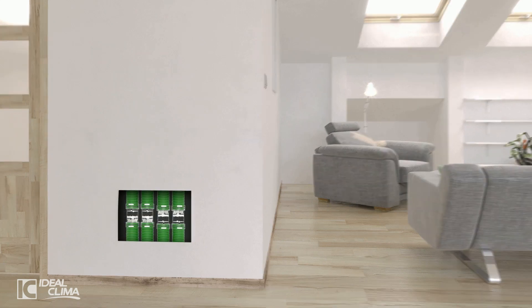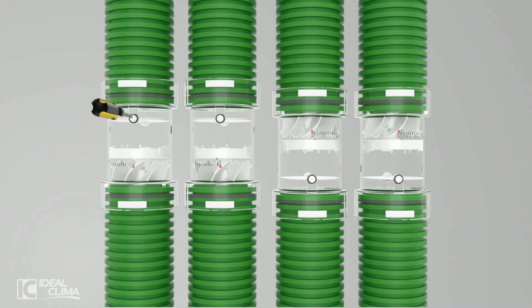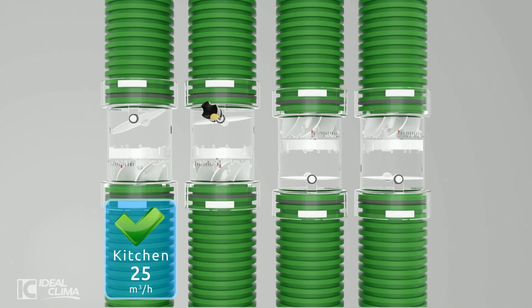MetroVent can be installed at any point along the duct, in a false ceiling, or concealed inside a partition, both on supply and extraction ducts. With MetroVent, ventilation balancing takes a matter of minutes.